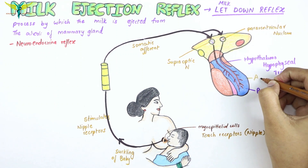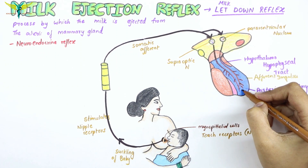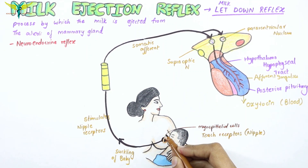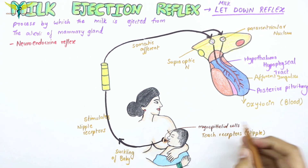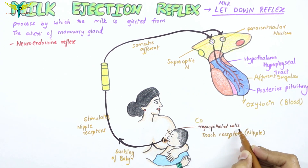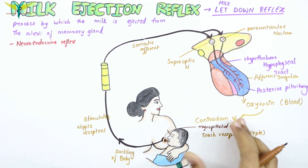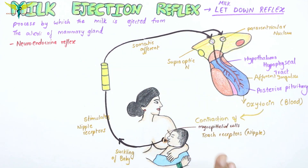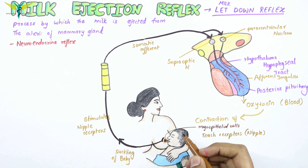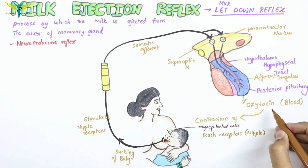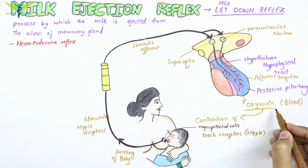These efferent impulses cause the release of oxytocin into the blood. When the oxytocin hormone reaches the mammary gland through the blood, it causes the contraction of the myoepithelial cells, and this contraction causes ejection of milk from the mammary glands. This reflex is called the milk ejection reflex. It is initiated by nervous factors — the touch receptors — and completed by hormonal action from oxytocin.